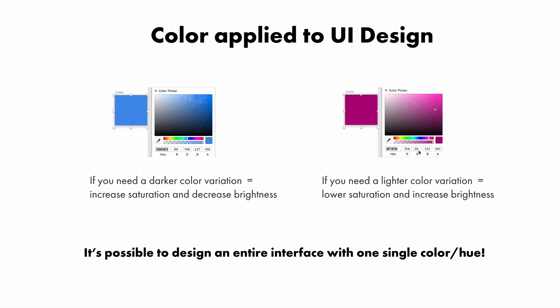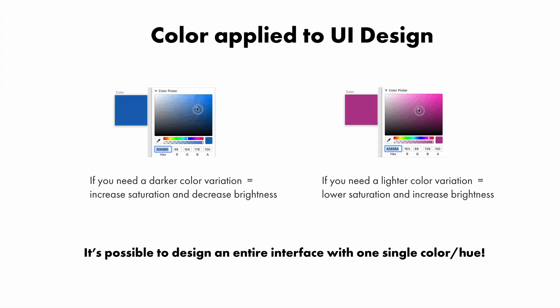If you need a darker color variation, increase saturation and decrease brightness — drag your color picker farther away from gray and closer to black. If you need a lighter color variation, lower the saturation and increase the brightness — drag your color picker closer to gray and farther away from black. It is possible to design an entire interface with one single color or hue.